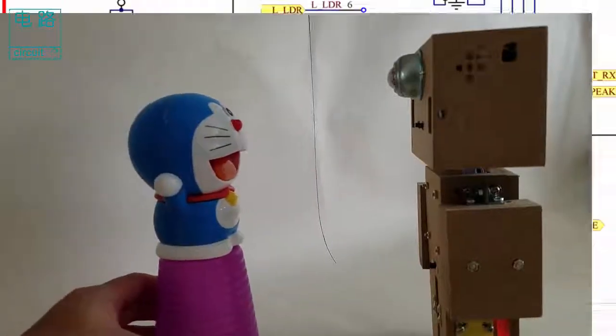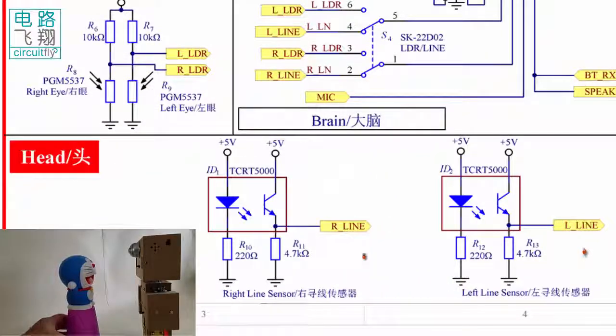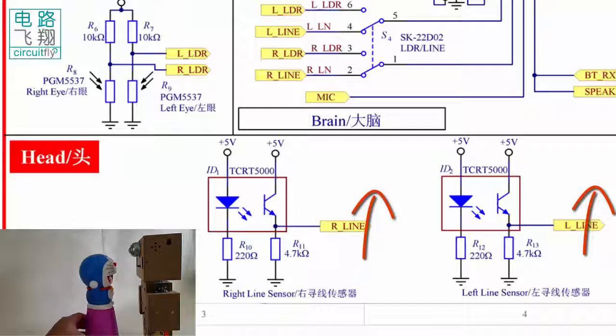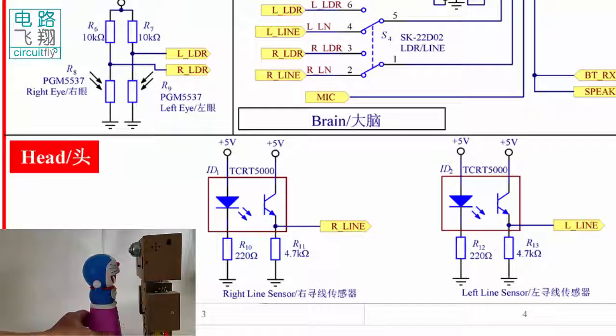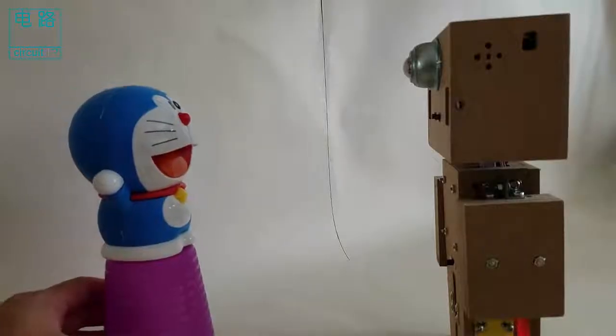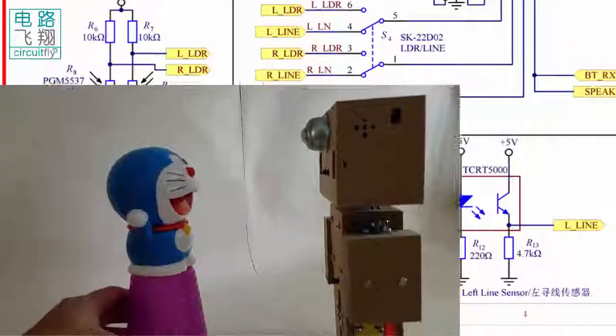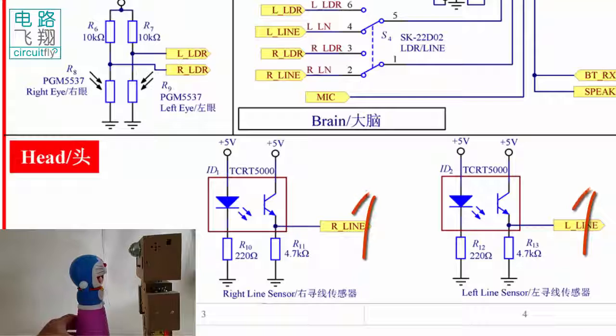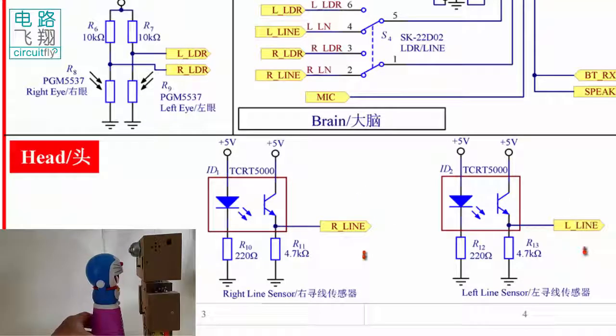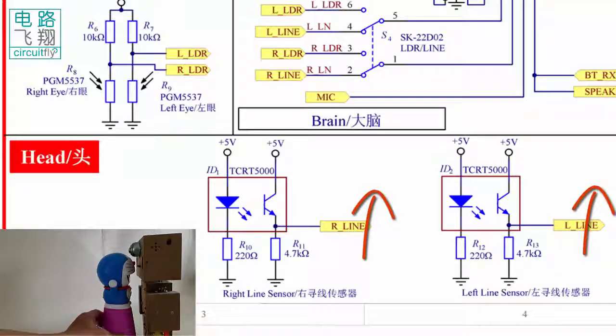障碍物越靠近传感器，反射信号越强，接收管电流越大，于是在接收管上的电压也就越大。通过检测接收管上的电压，就可以知道传感器前方是否有障碍物。The closer the object, the stronger the infrared reflection, the greater the voltage on the receiver. Measuring the voltage on the receiver will indicate whether there is an object in front of the receiver.